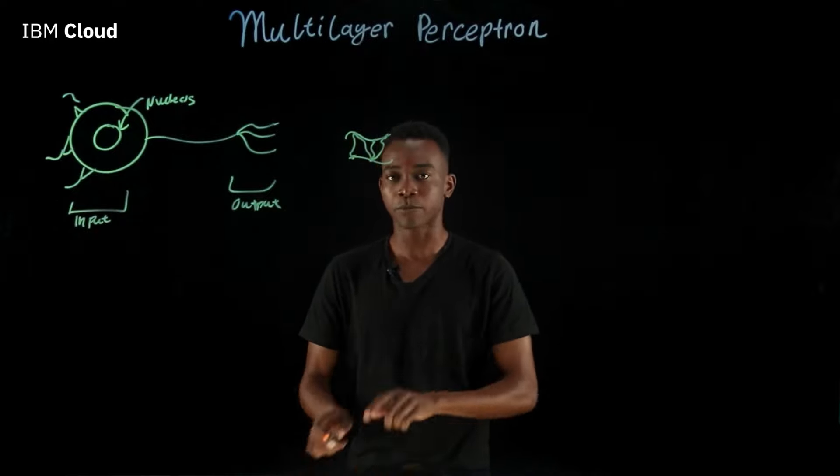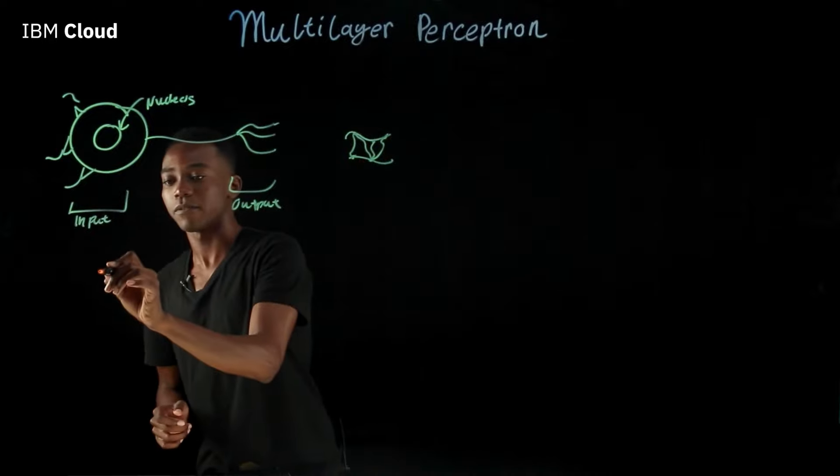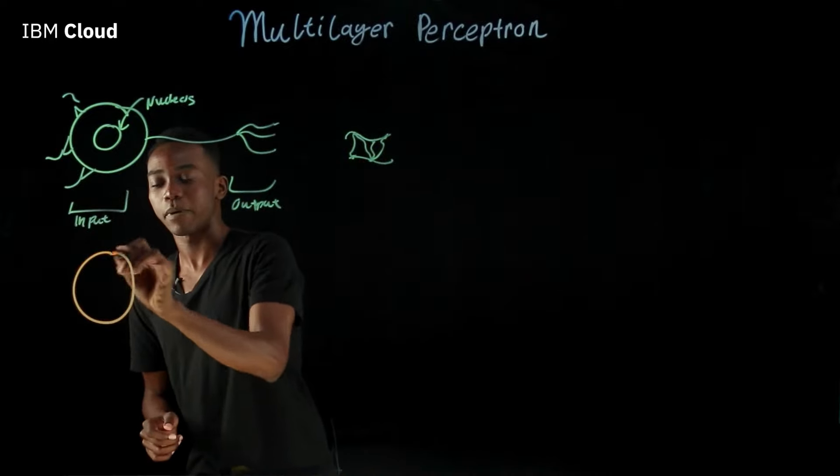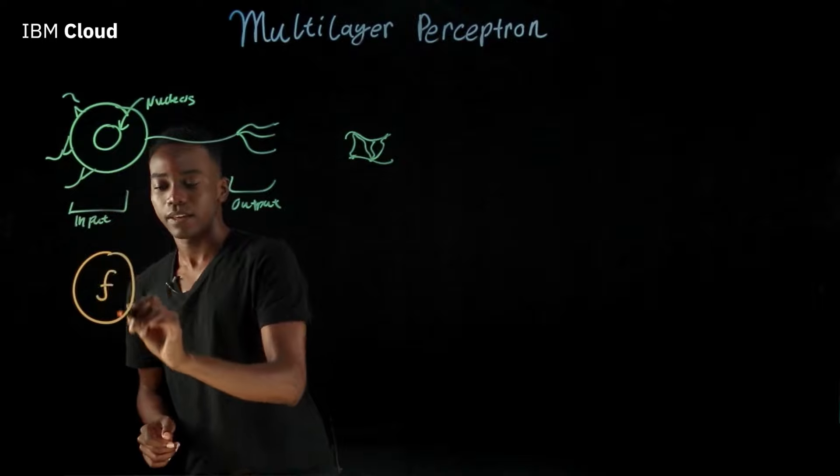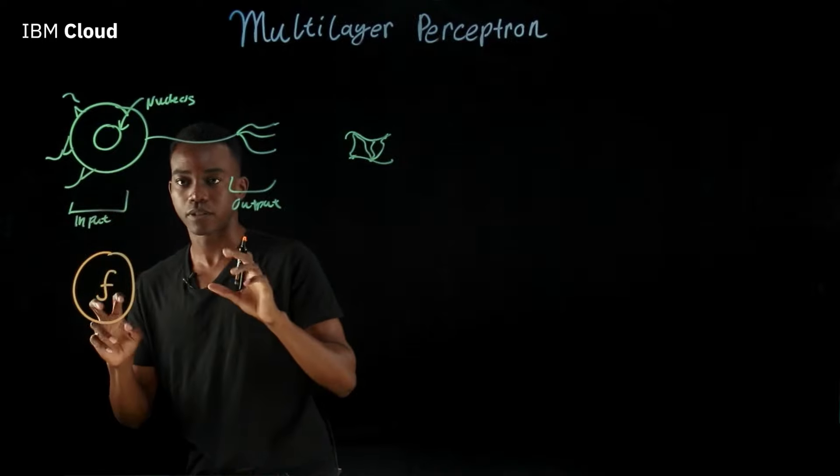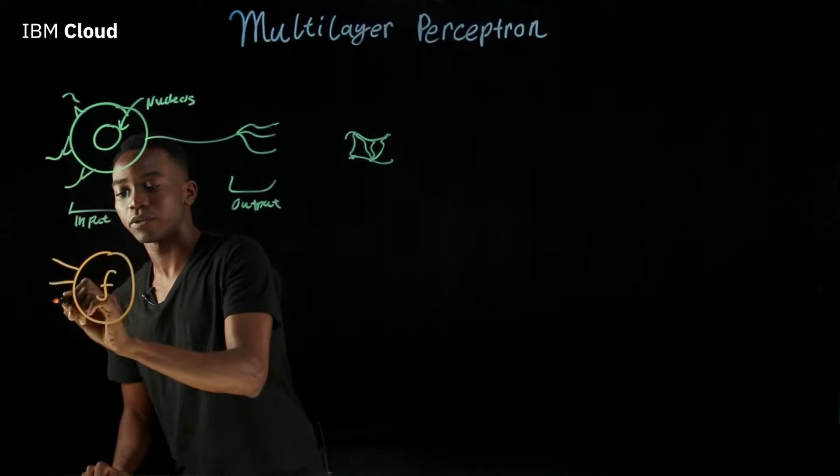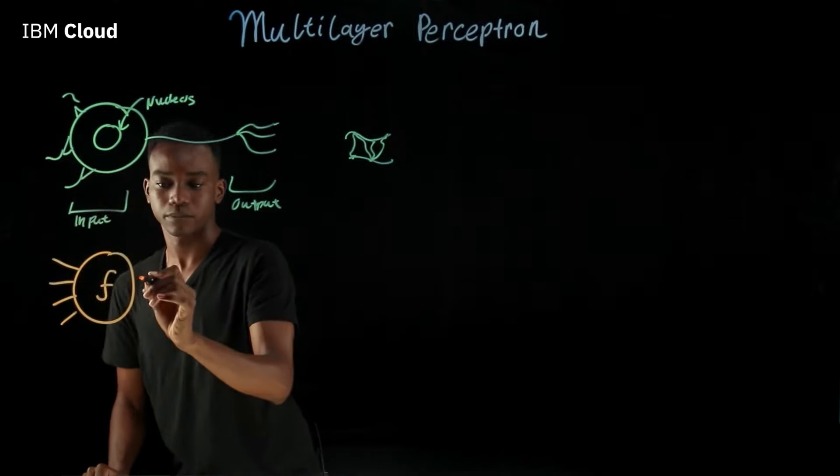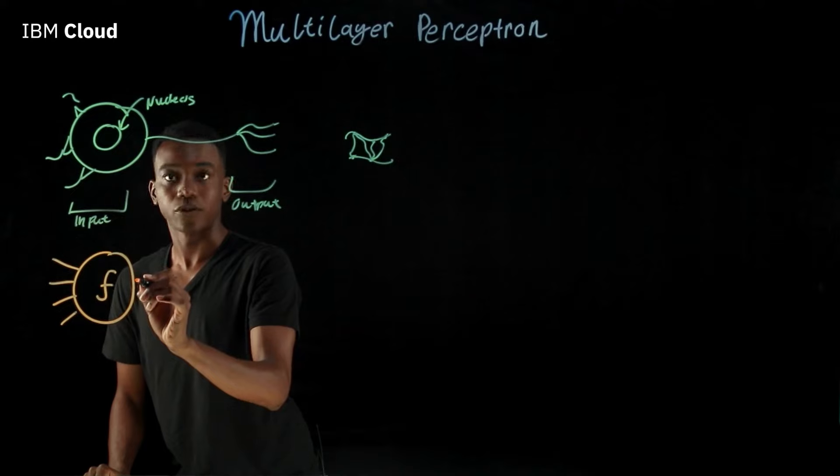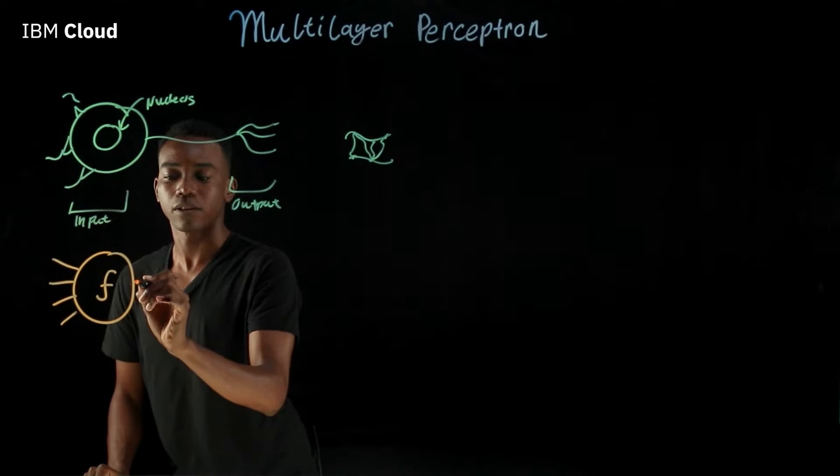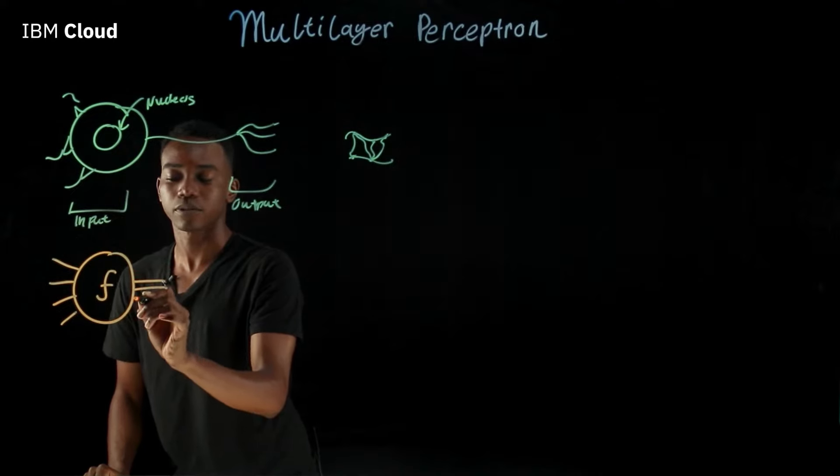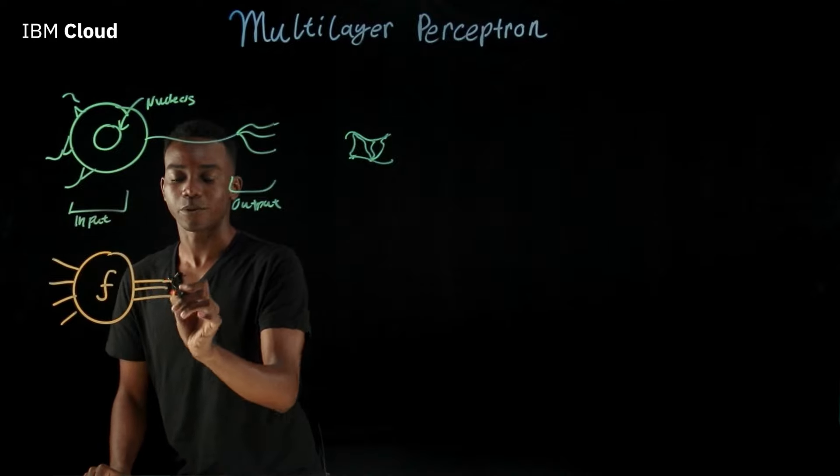In the same way, a perceptron is formed of three basic components. There's the function, which is the thinking part of the perceptron. There's the inputs that come in from other perceptrons. And just like the neuron, there's also a set of outputs that go out from the perceptron.